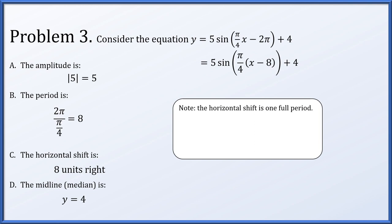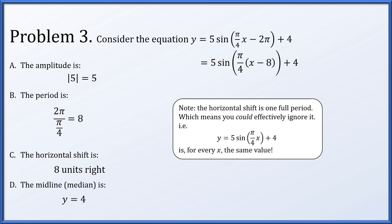Now observe: the horizontal shift of 8 units is exactly equal to the period. So we have shifted one full period, which means you can effectively ignore this shift. If you have a sinusoidal function and you shift it horizontally by one period, you haven't really changed anything. If we simply ignored that horizontal shift, for every value of x we would get out exactly the same y value.